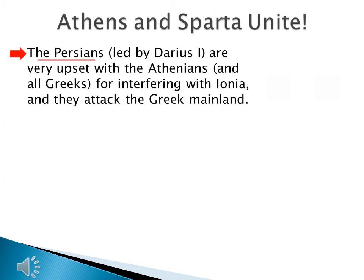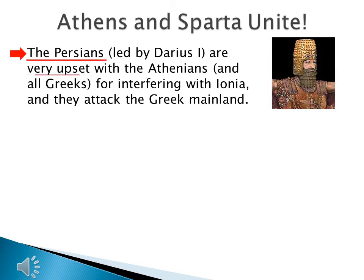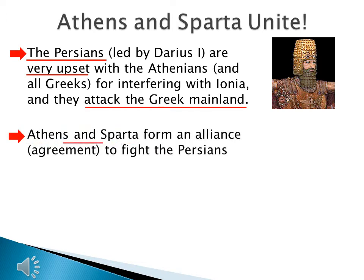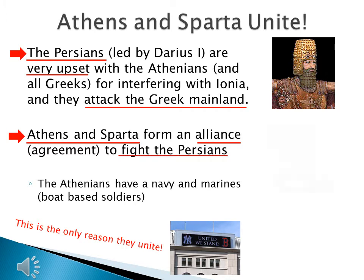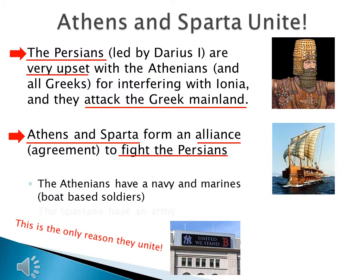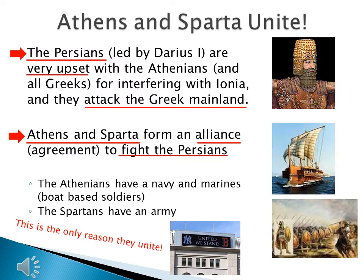As you can imagine, the Persians, led by Darius I, are very upset — not just with the Athenians, but with all Greeks, because the Persians feel the Greeks interfered with Ionia. The Persians attack the Greek mainland. The Athenians and the Spartans form an alliance to fight the Persian Empire. This is the only reason Athens and Sparta would unite — it's like the Yankees and the Red Sox joining teams to save baseball. The Athenians have a navy and marines, and the Spartans have an army. Together, they might just be able to defeat the Persians.